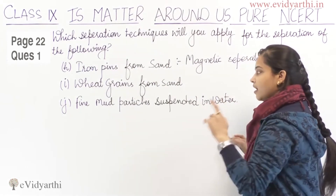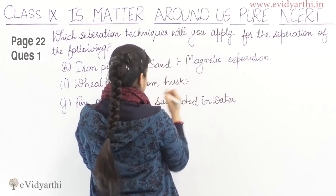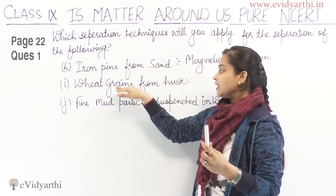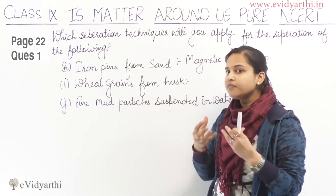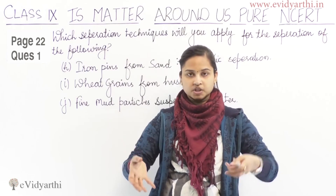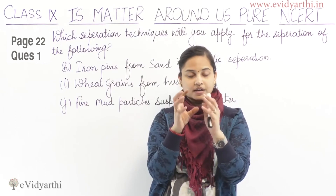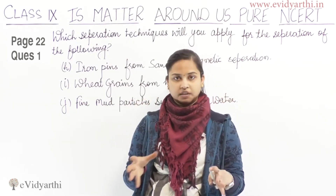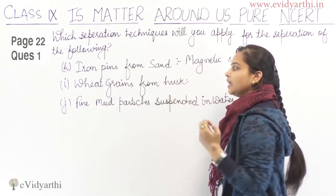Part I: Wheat grains from husk. The separation principle here is based on mass. Wheat grains have greater mass and are heavier, while husk has less mass and is lighter. You must have seen this — a sieve containing a mixture of wheat grains and husk is tossed slightly. The lighter husk particles separate out and fall down, while the wheat grains remain in the sieve. This technique is called winnowing, based on the principle of mass difference.